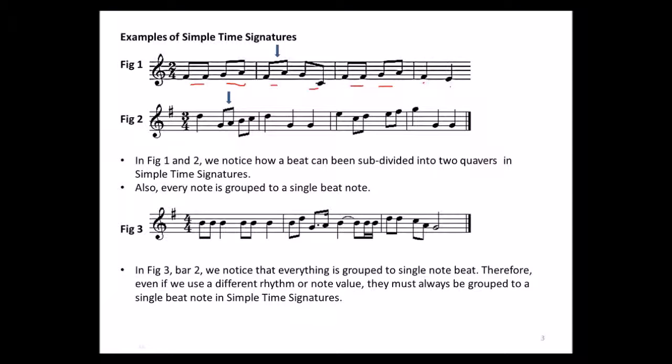In figure two, the three-four time: in bar one we have the first beat which is a crotchet, the second beat is two quavers, same with the third beat and so on. Every note is grouped to a single beat note — a single note, which is the crotchet, grouped on its own, same with the quavers.